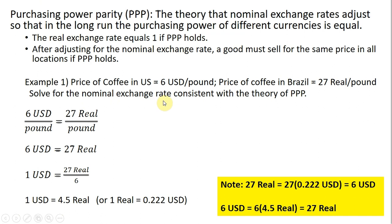Let's solve for the nominal exchange rate consistent with the theory of purchasing power parity. So all we're going to do is set six U.S. dollars per pound of coffee equal to 27 real per pound of coffee. The pound on the left-hand side and the right-hand side cancel, so six U.S. dollars equal 27 real. Dividing through by six, 27 divided by six gives us the implied nominal exchange rate assuming purchasing power parity holds. The implied nominal exchange rate is one U.S. dollar will trade for 4.5 Brazilian real.